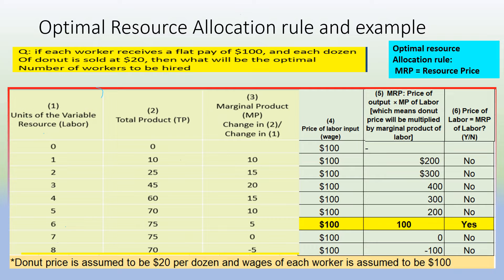The resource price in this case will be the labor price, which means the wages or salaries of each worker. MRP, which is marginal revenue product, is defined as the marginal product of an input — in this case labor — multiplied by the price of the output that that input is producing.